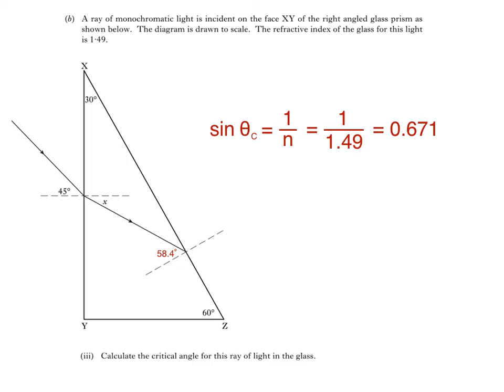Critical angle is then sin to the negative 1, 0.671, which equals 42.1 degrees.